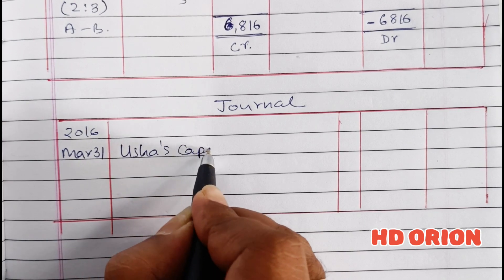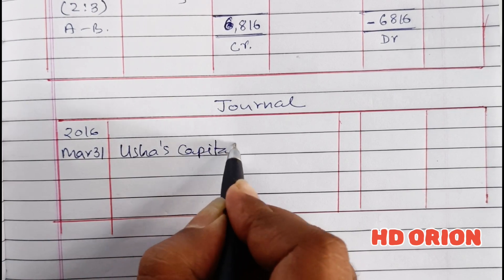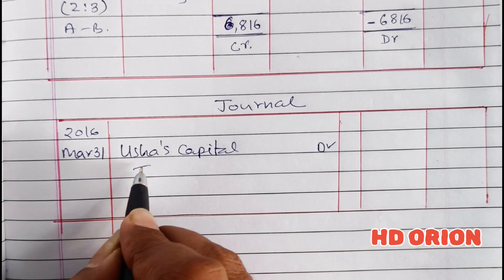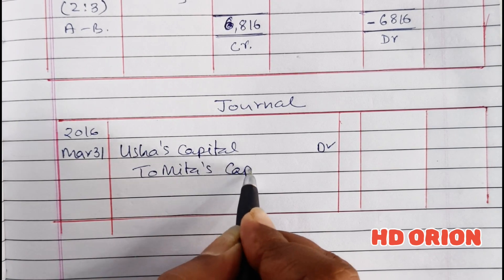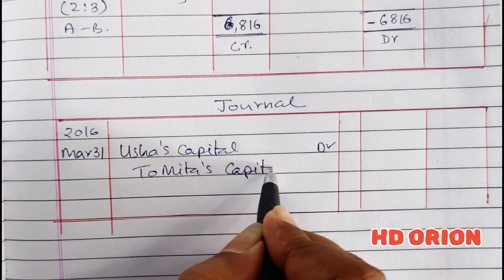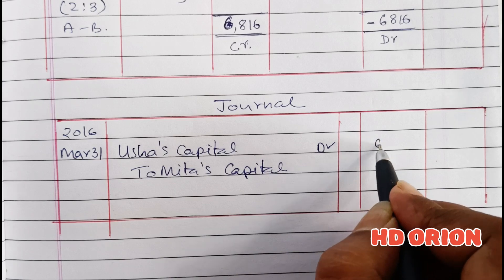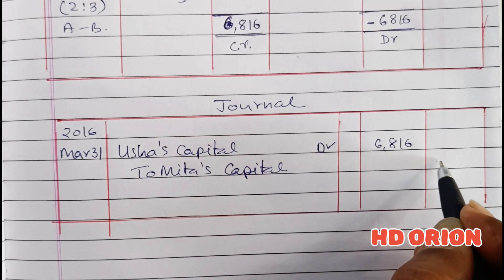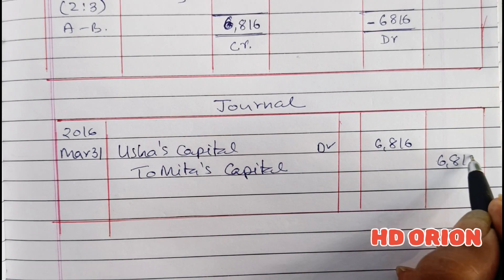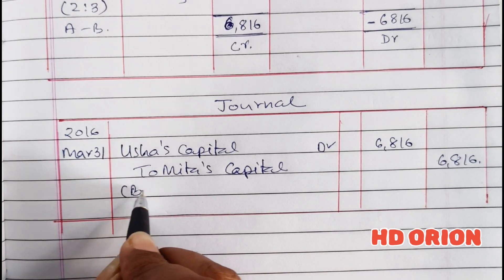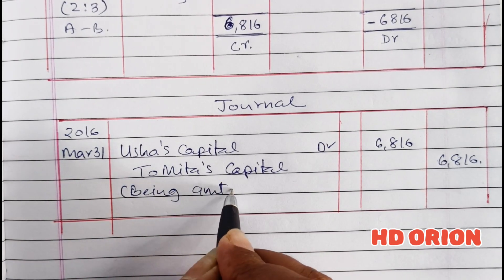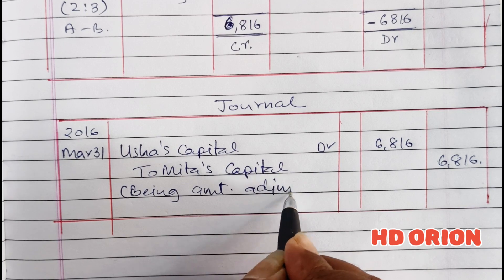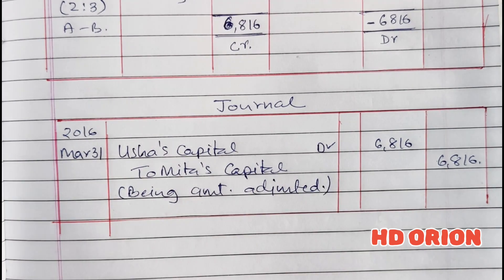So the journal entry is: Usha's capital account debited to Mita's capital account, Rs. 6,860, being capital accounts adjusted.